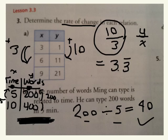And again, increasing by 200 and 5. 200 over 5, or 200 divided by 5, is 40 words per minute.